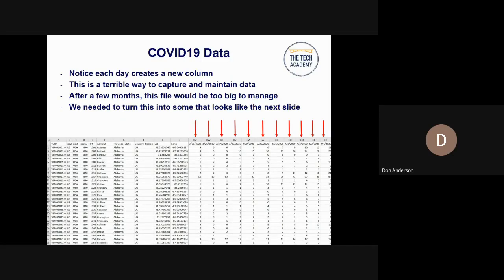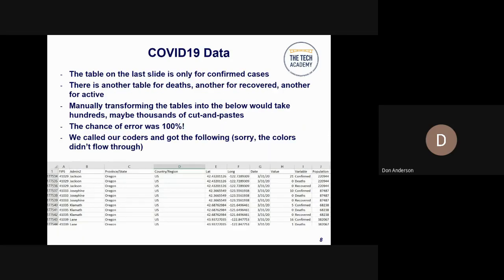This is what the data looks like when it comes down — the way it used to look. They're getting better at how they store it in GitHub, but at that time it was arranged in a very unfriendly way. Each column creates a new day, so every time there's a new day, another column is created. This is a terrible way to capture and maintain data. After a few months, this file would have too many columns to manage. We needed to turn this into something where dates are all in one column and values are all in one column — easy to manage and visualize.